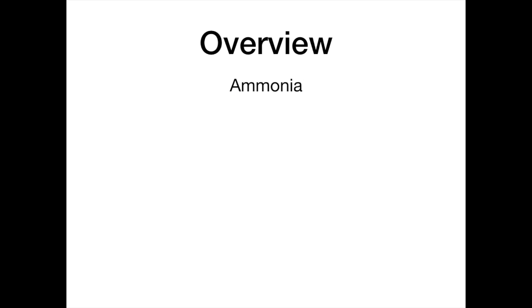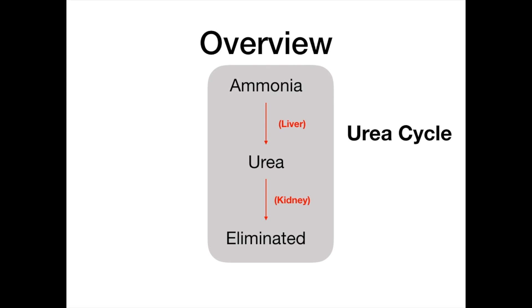Ammonia is sent to the liver where it's turned into urea. The urea is then sent to the kidney and eliminated from the body — only the kidney can eliminate urea from the body. Everything shown here in a gray box is the urea cycle. The urea cycle specifically takes ammonia, sets it through a series of specialized chemical reactions in the liver, forms urea, and then takes that urea and ships it to the kidney, where the kidney can urinate it out.